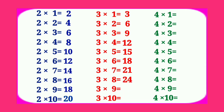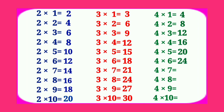3 8's are 24, 3 9's are 27, 3 10's are 30. Table of 4. 4 1's are 4, 4 2's are 8, 4 3's are 12, 4 4's are 16, 4 5's are 20, 4 6's are 24, 4 7's are 28.